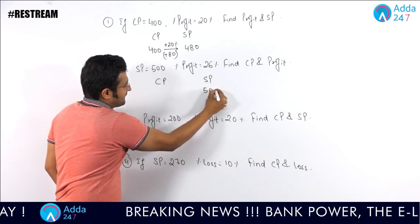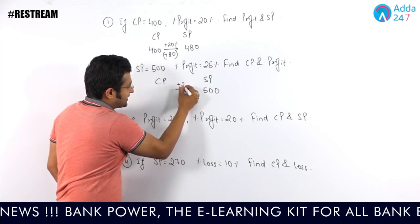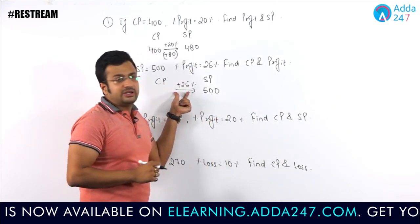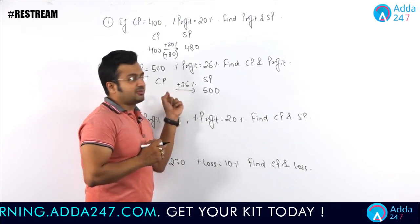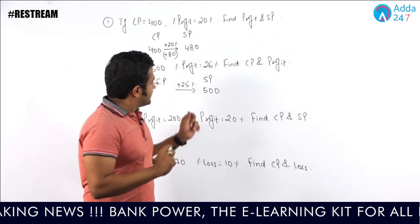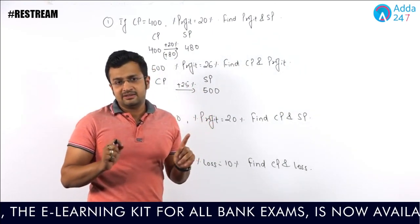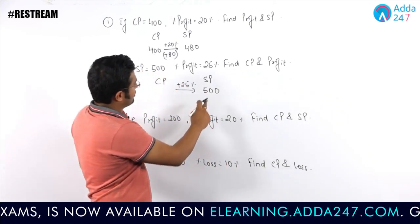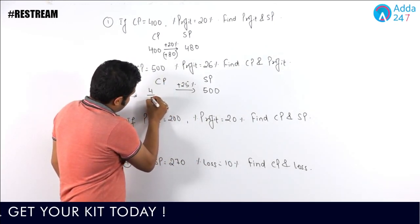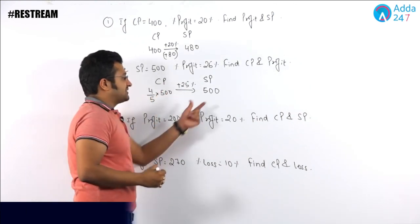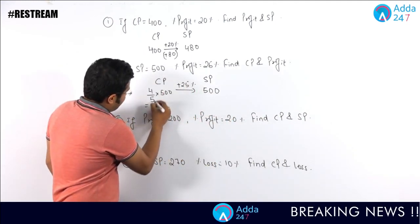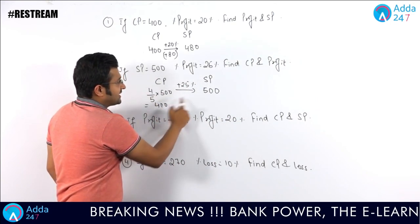Second question: SP is 500 and there is a profit of 25% — find CP. As discussed in the percentage increase and decrease video, 25% is 1/4, so the multiplying factor is 1 + 1/4 = 5/4. To go backward from SP to CP, multiply by the reverse: 4/5. So CP = 4/5 of 500 = 400. The difference between SP and CP is 100, so the profit is 100 rupees.